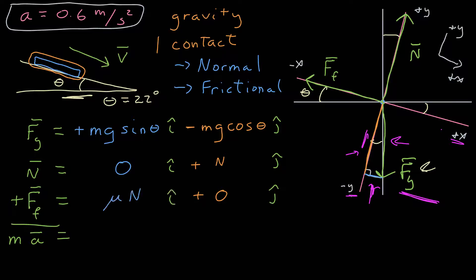From our model, that magnitude is the coefficient of kinetic friction times the magnitude of the normal force. And from my diagram, I see that it's pointing along the negative x-axis, so I include that negative sign with the component.